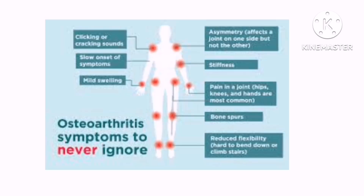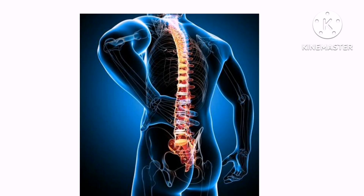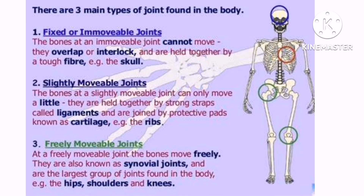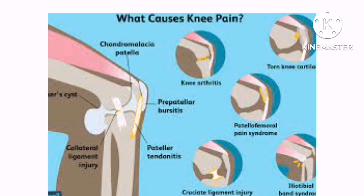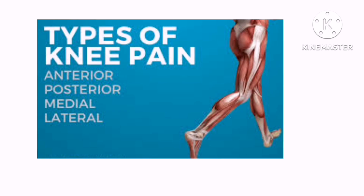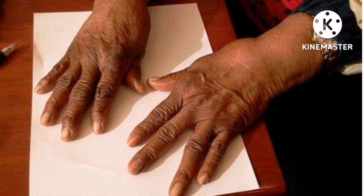If someone is overweight, weight-bearing becomes very difficult on joints such as the knees and hips. To improve the outlook, it is good to lose some weight. Regarding gender, women tend to develop osteoarthritis more in the knees and hands. Injury and operations on a joint may also lead to this problem later in life — particularly if someone starts exercising too soon after surgery before the joints have properly healed.